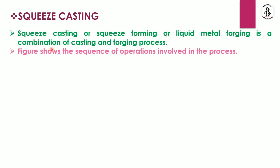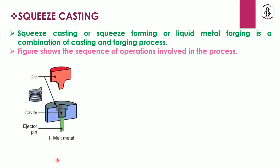Let us start with the various steps for making a squeeze casting process. Step number one: melt the metal. You can see this is our mold cavity as per the required shape and size, this is our ejector pin — which will be used after the solidification process — and this is our die material.